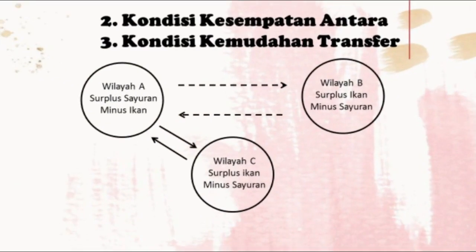Yang kedua ada kesempatan antara. Terdapat wilayah C yang letaknya lebih dekat dengan wilayah A. Wilayah C ini surplus ikan dan membutuhkan sayuran. Karena jaraknya lebih dekat, ongkosnya pun jauh lebih murah untuk menuju ke wilayah A. Penduduk pada wilayah A menjalin kerjasama dengan penduduk yang ada di wilayah C, sehingga hubungan antara wilayah A dan wilayah B semakin melemah.